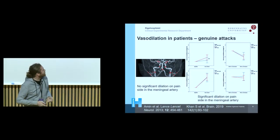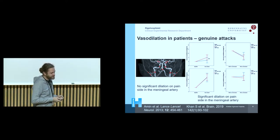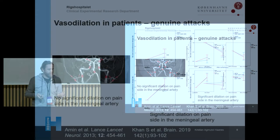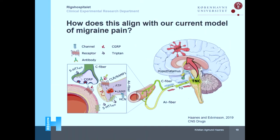Looking at the patient data, there is some contrasting evidence across different artery types. But I would say the likelihood of vasodilation occurring in the patient seems stronger now than some years ago — especially the change in the middle meningeal artery, where you have vasodilation on the pain-related side. So in that way, there are many links between the vasculature and vasodilation in the human data. The question is how we take this into current animal models.